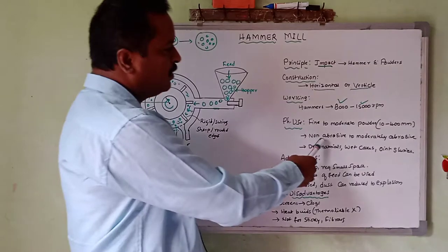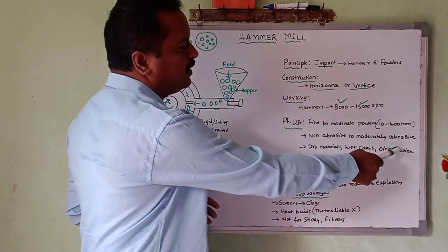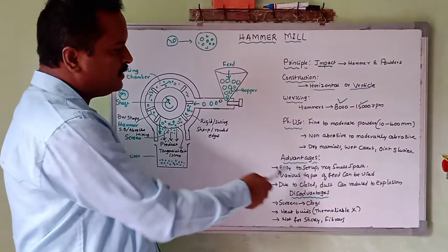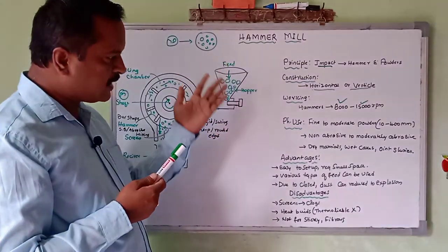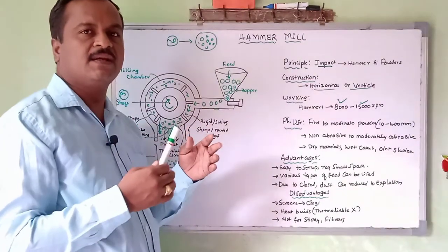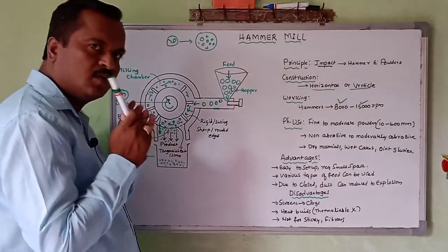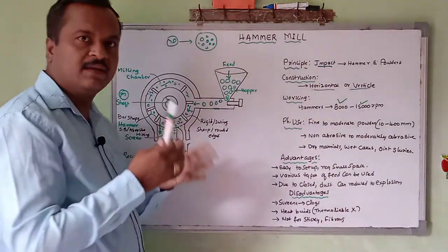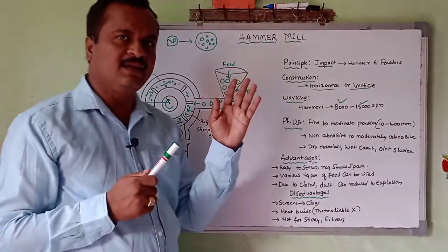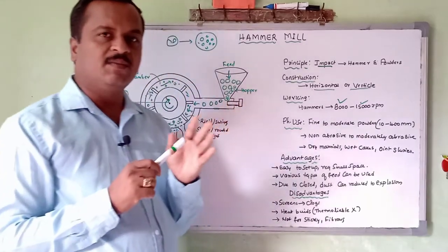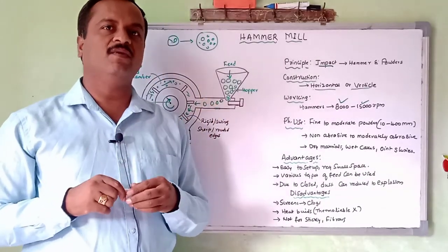Moderately abrasive powder, dry material, and wet materials can all be processed. Advantages include easy setup, small space requirement, and size reduction capability. The equipment is fully closed, preventing explosion and contamination. Disadvantages include heat generated when the equipment runs — not suitable for thermolabile products — and the hammer mill is not suitable for sticky or fibrous materials. So students, today we covered the hammer mill: its principle, construction, and working. Thank you very much for watching this video.